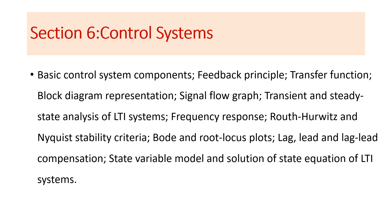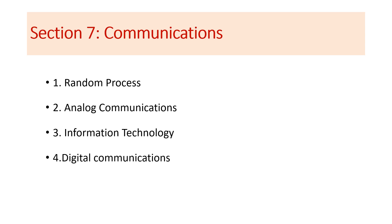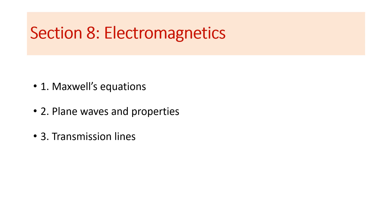Section seven is Communications, covering both analog and digital communications. The four main concepts are: Random Processes (including auto-correlation, cross-correlation, and probability density function), Analog Communications (including modulation techniques like AM and FM), Information Theory, and Digital Communications. These four concepts form the basis of questions in GATE 2024 for communications.